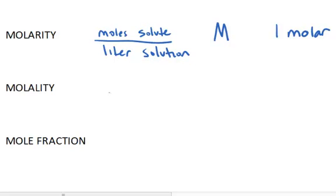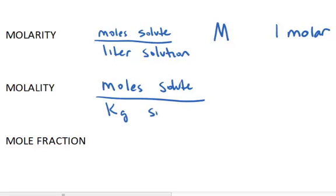chemists. Molality is defined as the moles of solute per kilogram of solvent. The abbreviation commonly used is lowercase m, and if you're going to talk about a solution that has one mole solute per kilogram of solvent, the term is one molal.